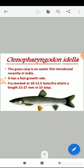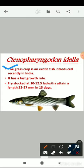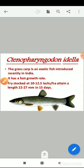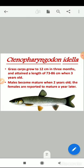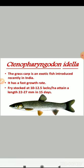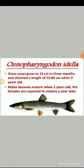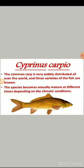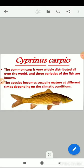Ctenopharyngodon idella, the grass carp, is an exotic fish introduced recently in India with a fast growth rate. Fry stocked at 10 to 12.5 lakhs per hectare attain a length of 22 to 27 millimeters in 15 days. Grass carp grows to 12 centimeters in 3 months and attains a length of 73 to 86 centimeters when 3 years old. Males become mature when 2 years old; females reportedly mature earlier. Cyprinus carpio, the common carp, is very widely distributed over the world; 3 varieties are known and the species becomes sexually mature at different times depending on climatic conditions.